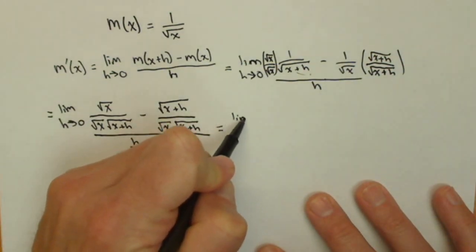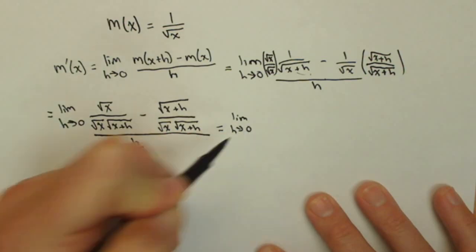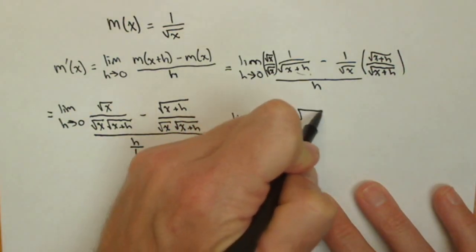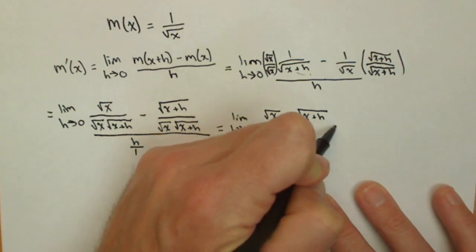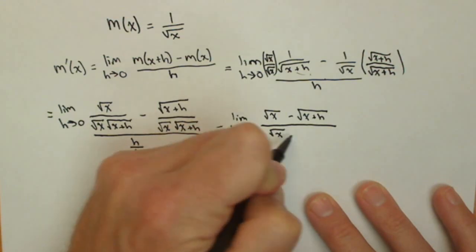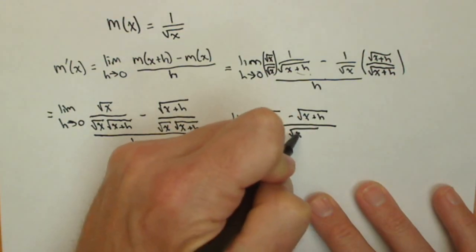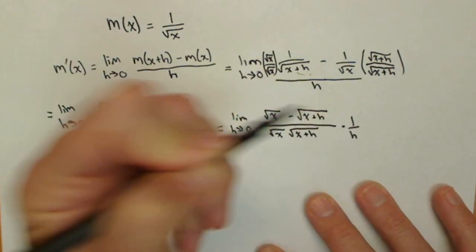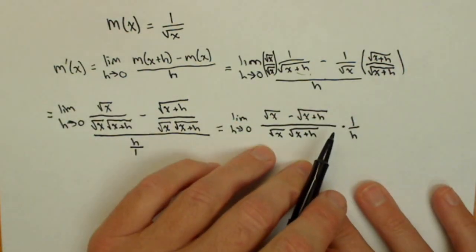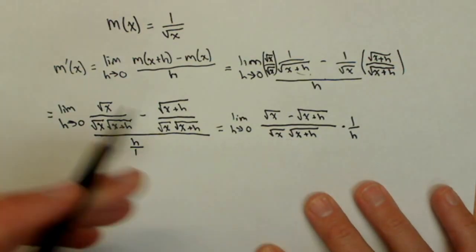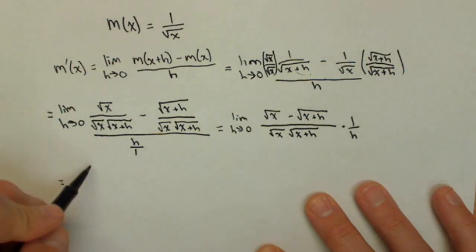So, we have limit as h approaches 0 of square root of x minus square root of x plus h over square root of x, square root of x plus h times 1 over h. Again, it's a little cleaner, and if I want, I can actually just put that h in the denominator here. So, I'm going to do that in the next step.